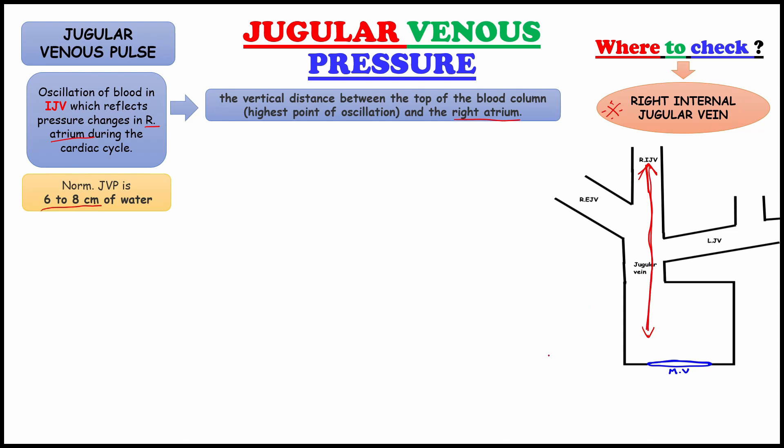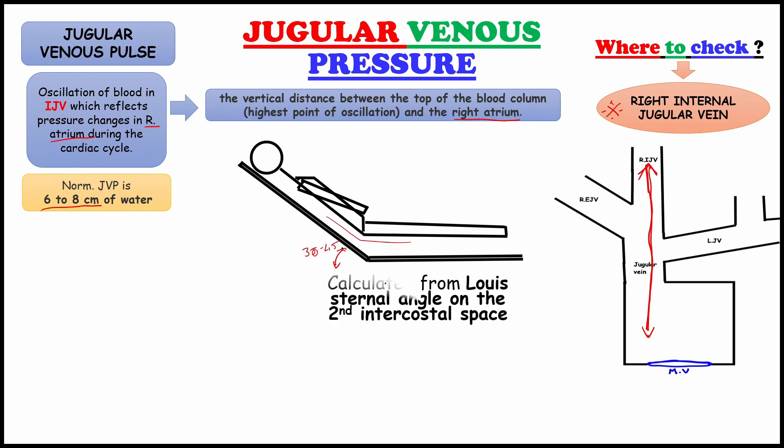Next, how we will check? We ask the patient to comfortably sit on the bed. Head portion of the bed is elevated 30 to 45 degrees and we calculate from the louis sternal angle on the second intercostal space. By the way, I forgot to mention that we don't palpate for jugular venous pulse. We use torchlight to check the jugular venous pulse.